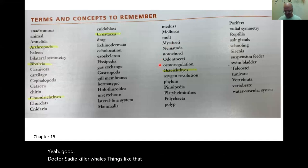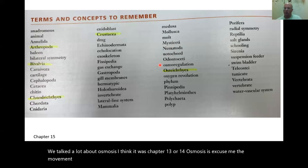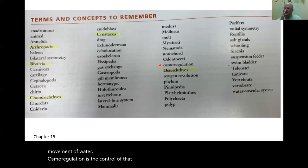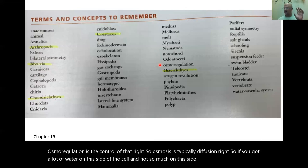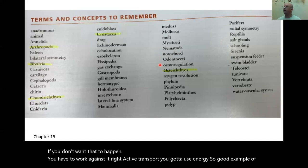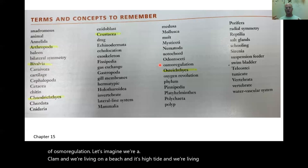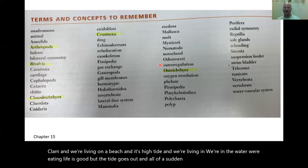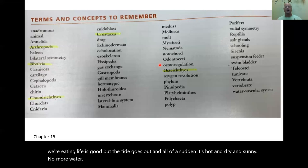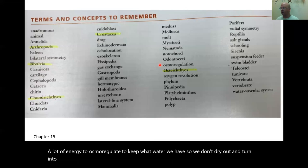Osmoregulation — we talked a lot about osmosis, the movement of water. Osmoregulation is the control of that. Osmosis is typically diffusion — water moves down a gradient — but if you don't want that to happen, you have to work against it with active transport. A good example: imagine you're a clam on a beach at high tide. When the tide goes out and it's hot and dry, you have to spend a lot of energy to osmoregulate and keep your water so you don't dry out.